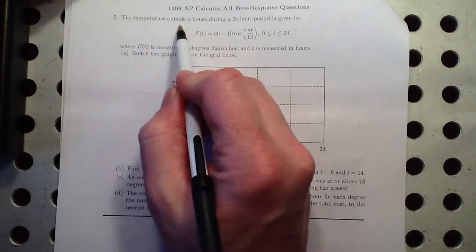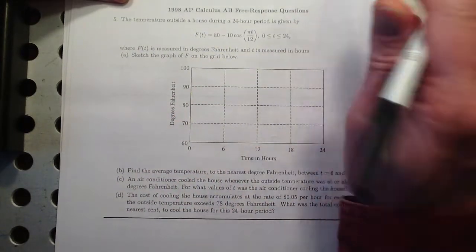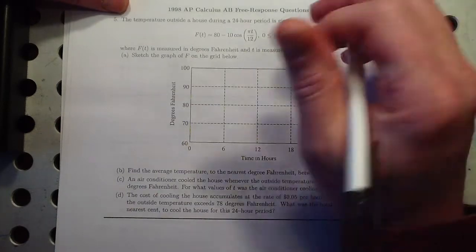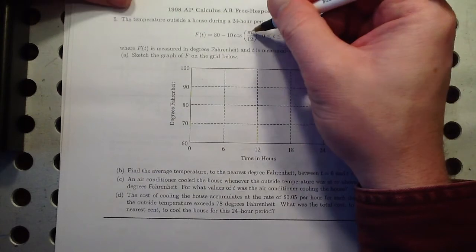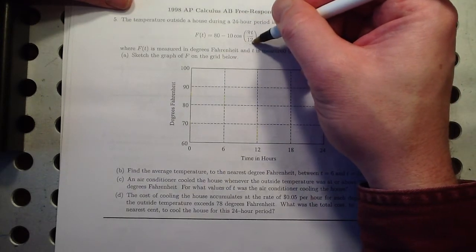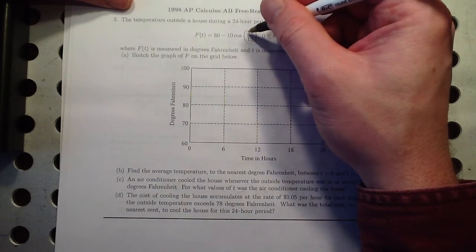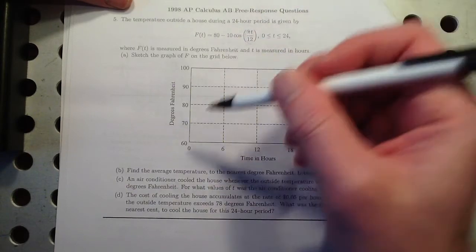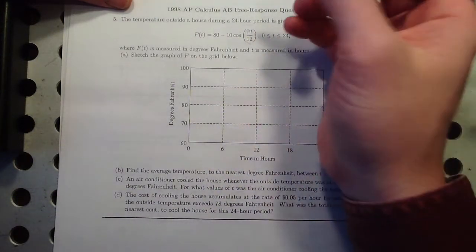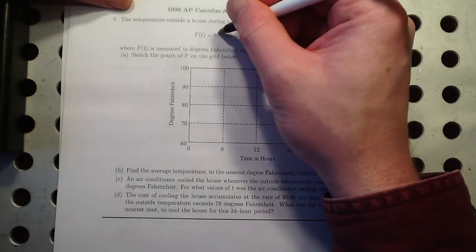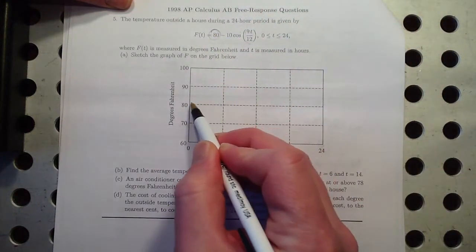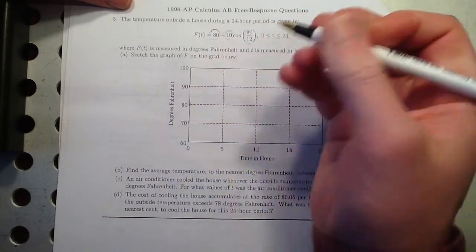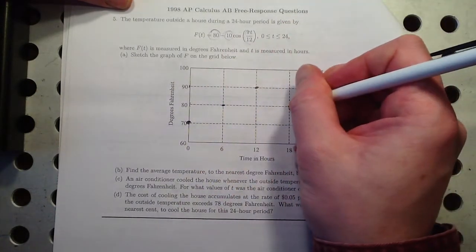All right, number five. The temperature outside a house during a 24-hour period is given by this function. And this is the no calculator part. So they want us to sketch a graph of this. Well, let's see. The period of this, remember the period of a trig function is 2 pi divided by this. So 2 pi divided by pi over 12 is actually 24. So we're going to get one full cycle. It's a negative cosine function. So that means it's going to look like something like this. It's a cosine function upside down. It's been bumped up 80, right? So this is its middle line. And instead of going up and down 1, its amplitude is now 10. So it goes up and down by 10. So that means this is its lowest point. And it goes through its cycle like this.